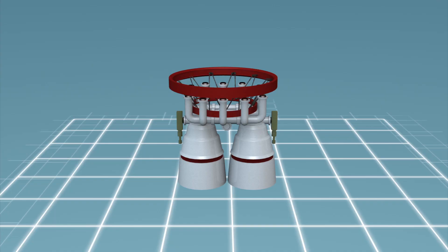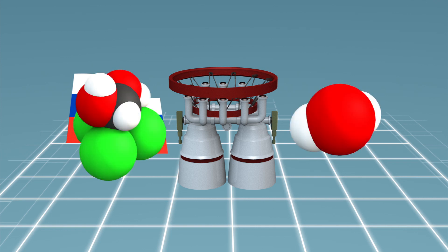The Atlas V's first stage is powered by the Russian-made RD-180 engine. The RD-180 is a dual-combustion chamber engine fueled by a mix of kerosene and liquid oxygen.